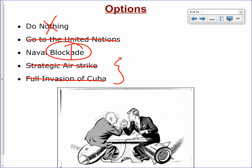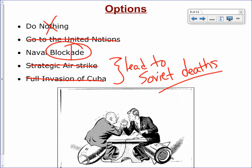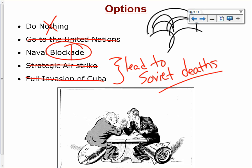The airstrike and full invasion options were strongly considered but ultimately taken off the table because they would lead to Soviet deaths. Soviet personnel and soldiers were on the ground helping install the missiles. The U.S. felt that killing Soviet soldiers would be an act of war — the Soviet Union would respond, which would lead to nuclear war, the end of the world as we know it.